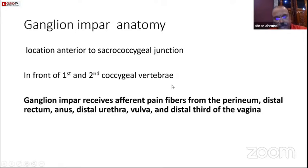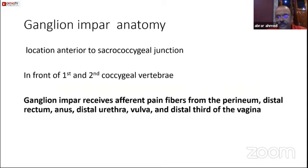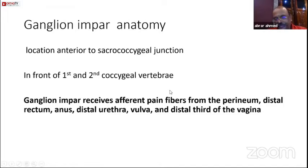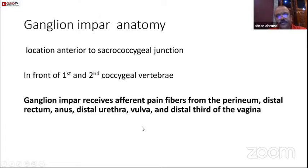What is the importance of this ganglion? Basically, this ganglion receives afferent pain fibers from the perineum, rectum, anus, distal part of the urethra, vulva, and distal part of the vagina. So if there is a problem in any of these anatomical structures — a chronic problem not responding to normal pharmacological treatment — then you may consider these patients for ganglion impar blockade.